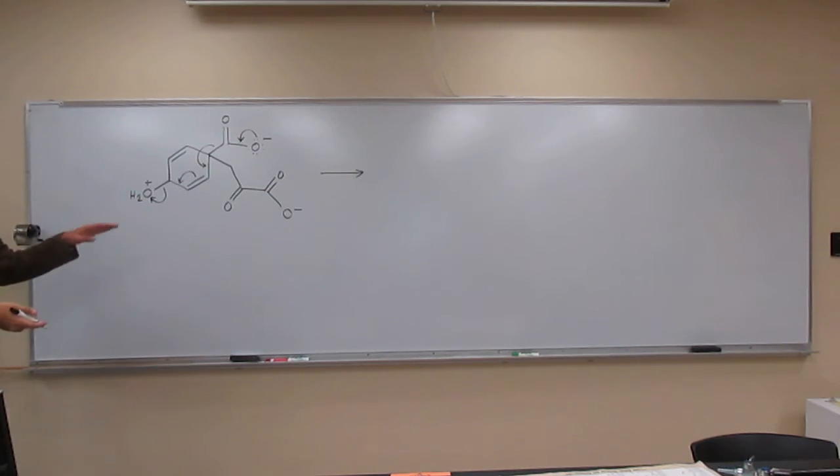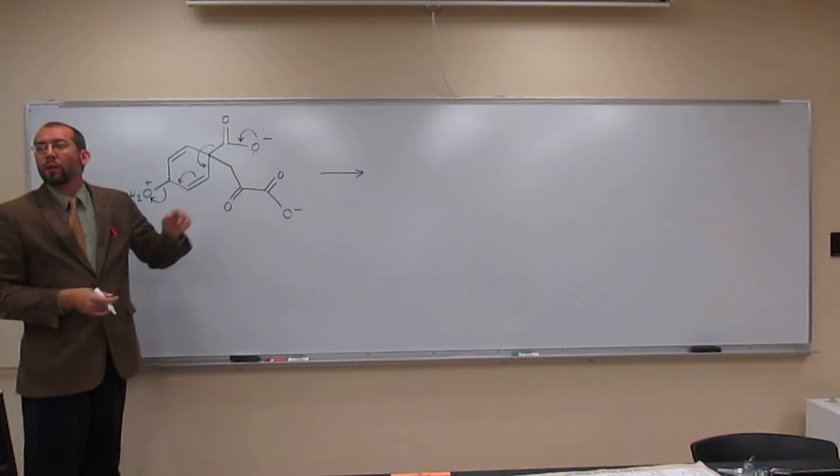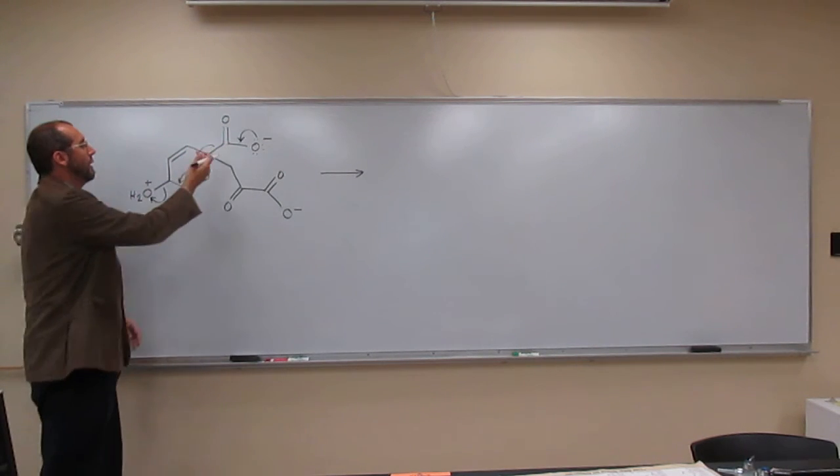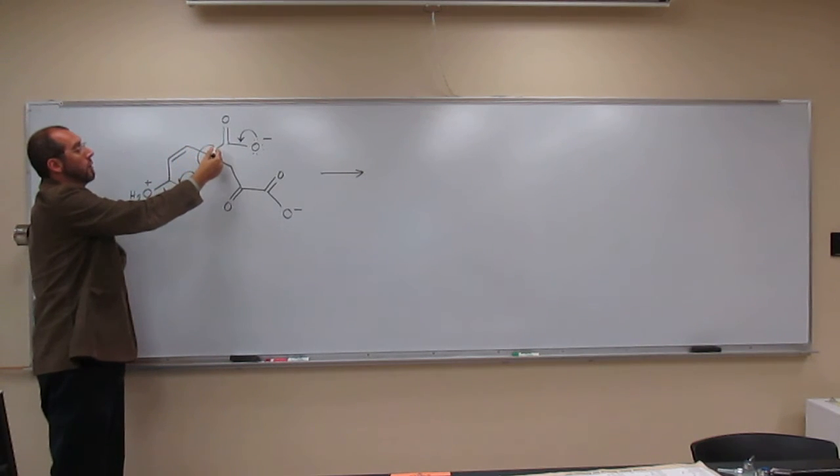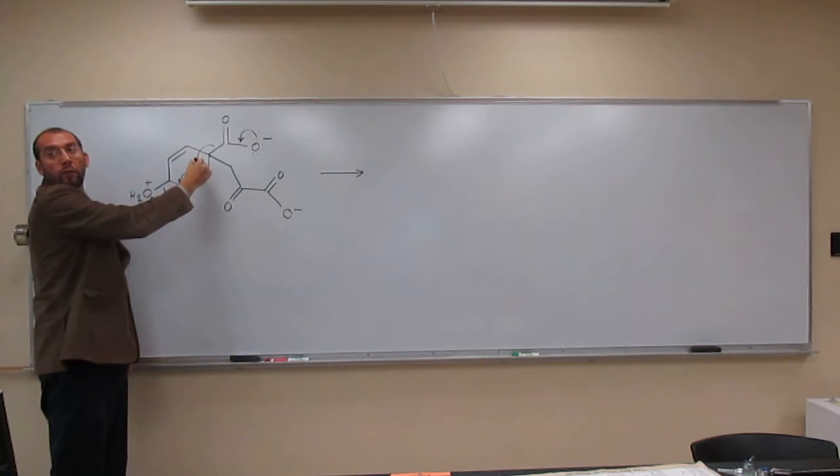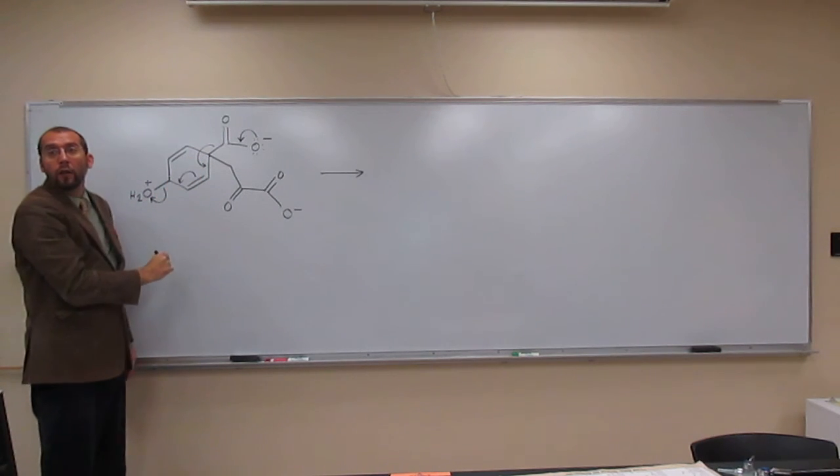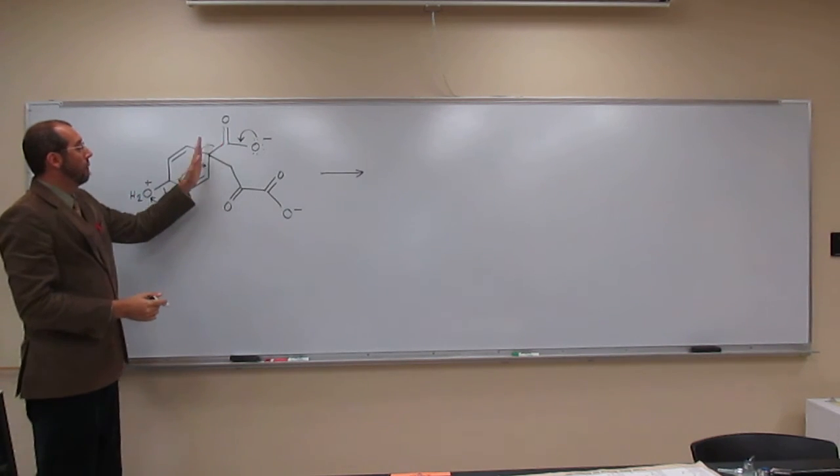This is what almost everybody who got this one wrong was leaving that bond there. This is showing you that it's not going to be there anymore. In fact, these two electrons are going to make a double bond. So they're not going to be here anymore. They're going to be here.